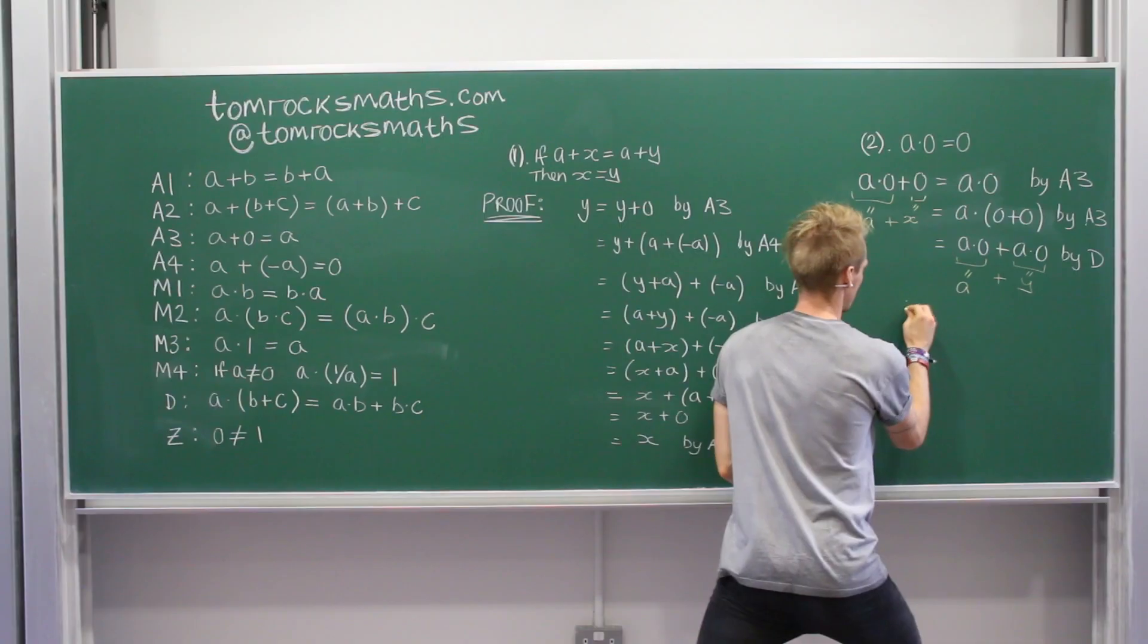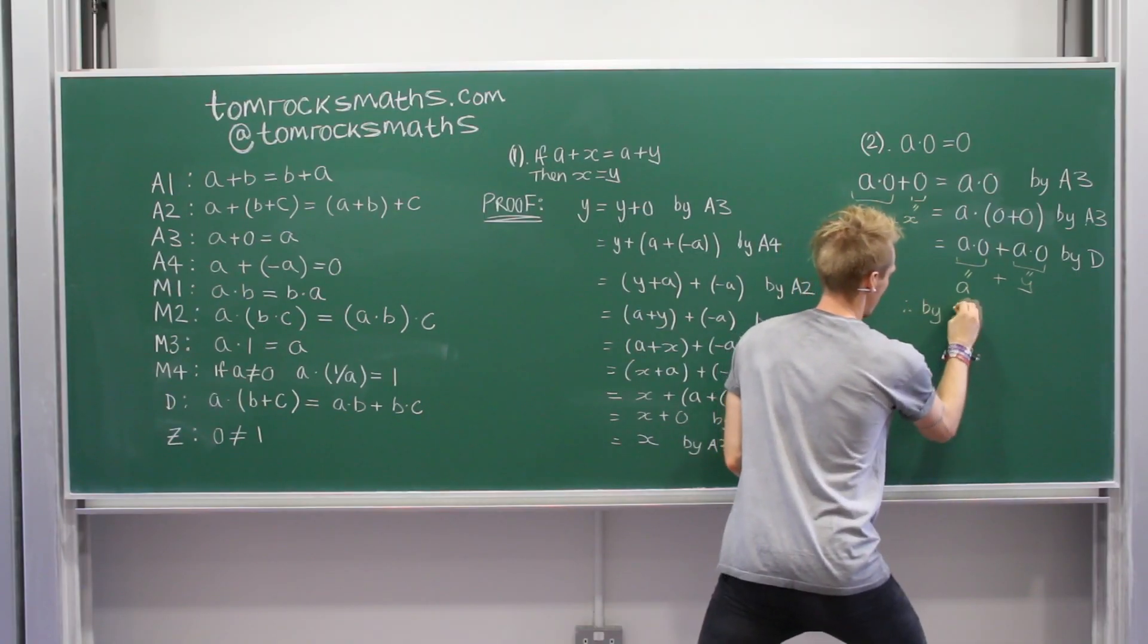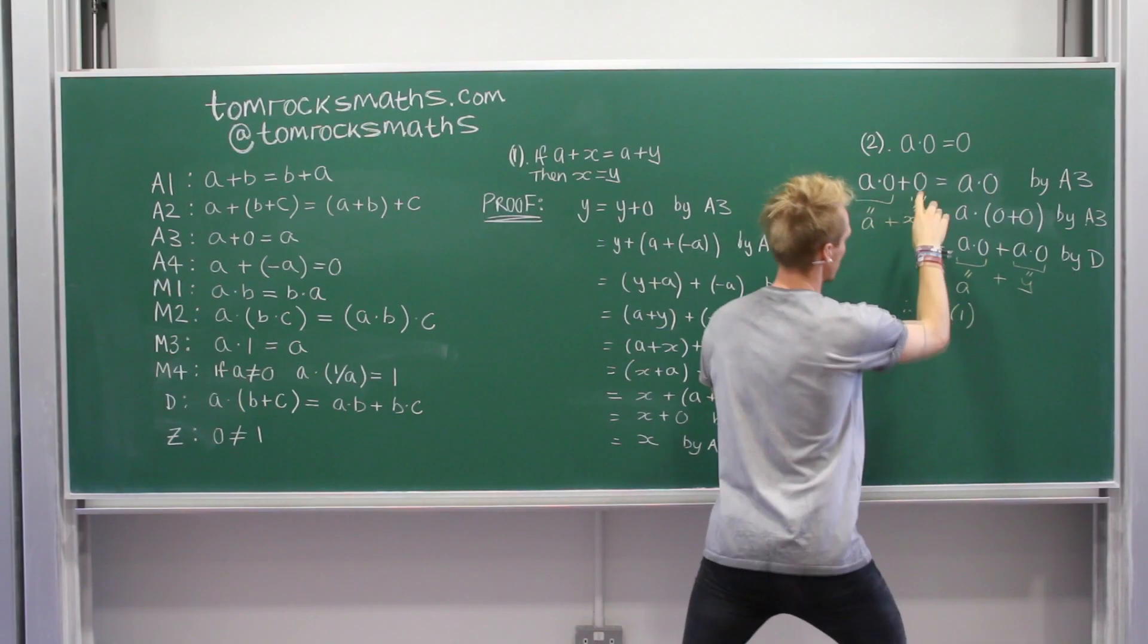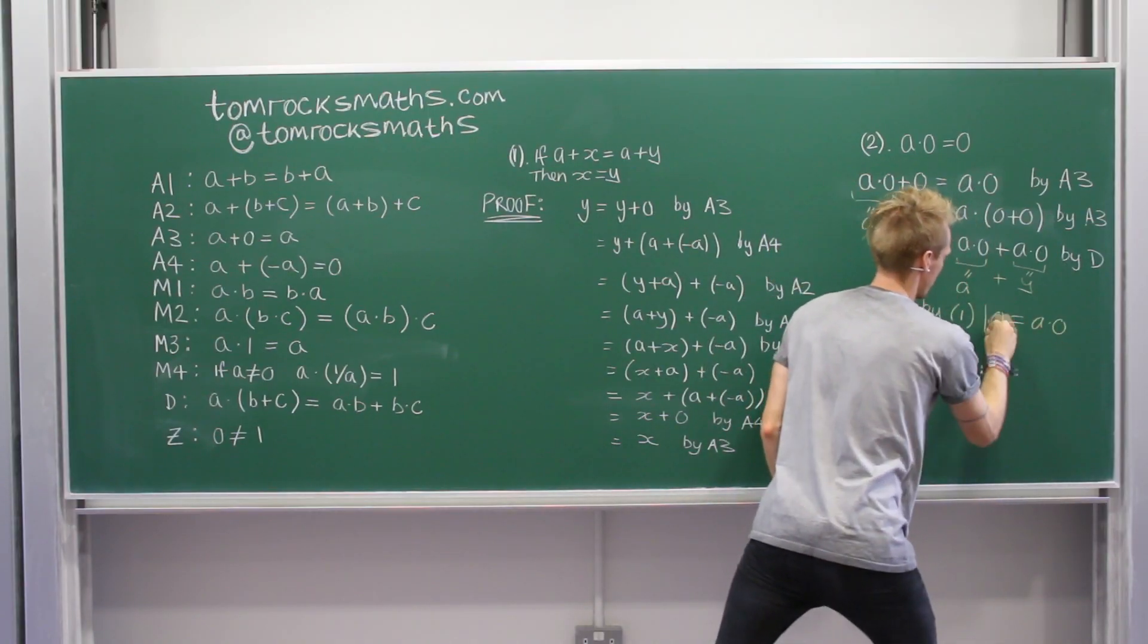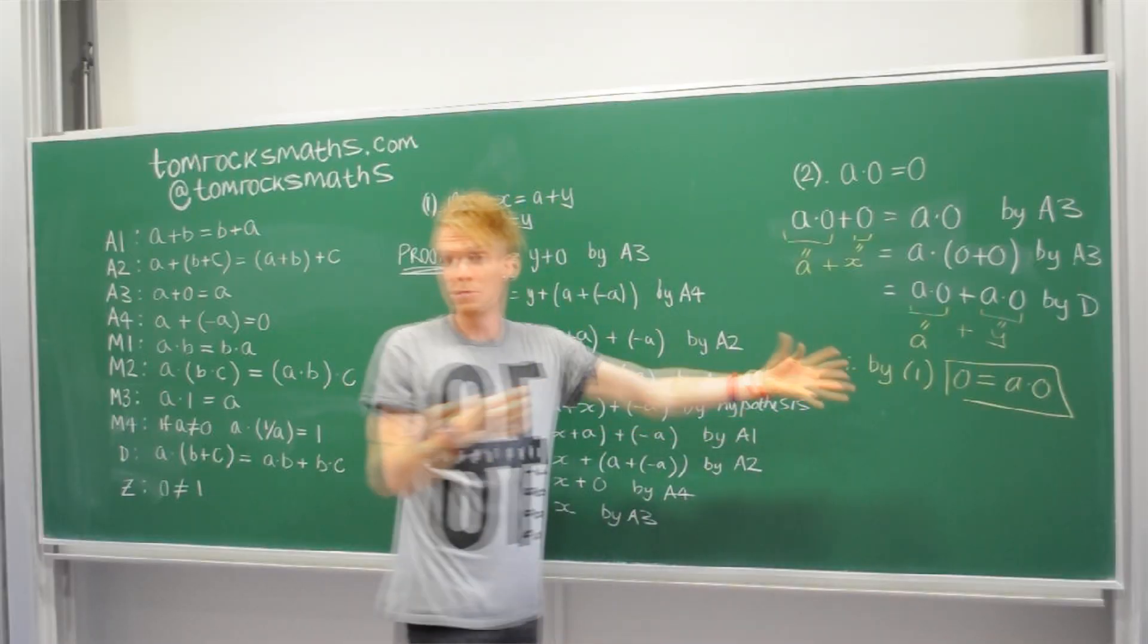So therefore, by rule 1, we know that x, which is 0, equals a dot 0. And we're done. That's what we wanted to prove at the very beginning.